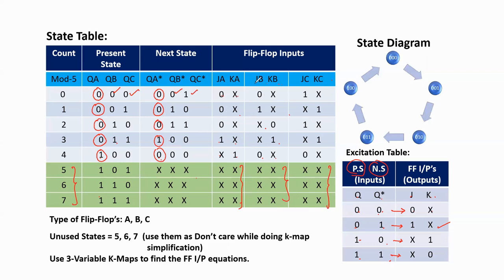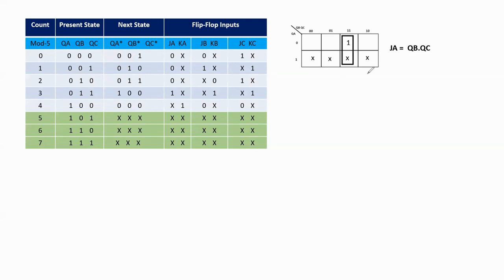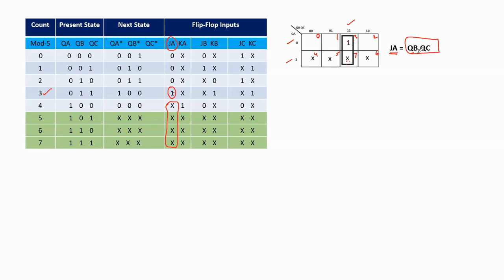From this state table, we have to find the flip-flop input equations to develop the circuit diagram. We use K-maps to get the simplified flip-flop input equations. This is a three-variable K-map. First I am doing it for JA. For JA we take the JA column and consider 1s and don't cares. The min-term boxes are numbered 0 through 7. The value 1 is in min-term box 3, and boxes 4, 5, 6, 7 are filled with don't cares. Grouping the adjacent 1 and don't care gives JA = QB · QC, because the group lies in both rows (eliminating QA) and one column where QB=1 and QC=1.